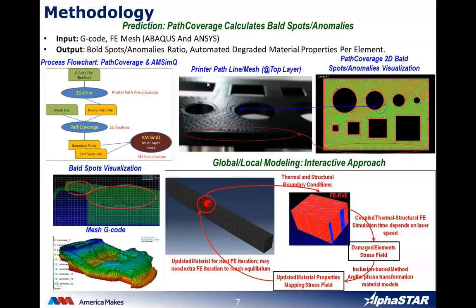The Bosch example using ABS polymer shows anomalies around the edges and circles of the top layer, predicted in AMSYNC path coverage software. Similarly, the car example shows bald spots at comparable locations. This also demonstrates GENOA 3DP's capability to show mesh generation and G-code.